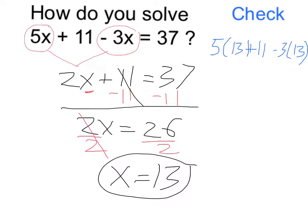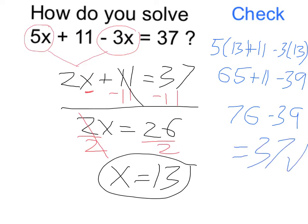Slightly sloppy here, but 5 times 13 is going to be equal to 65. So I have 65 plus 11 minus 3 times 13 is 39. So that's going to be 76 minus 39. And 76 minus 39 does equal 37, so we have confirmed it there.